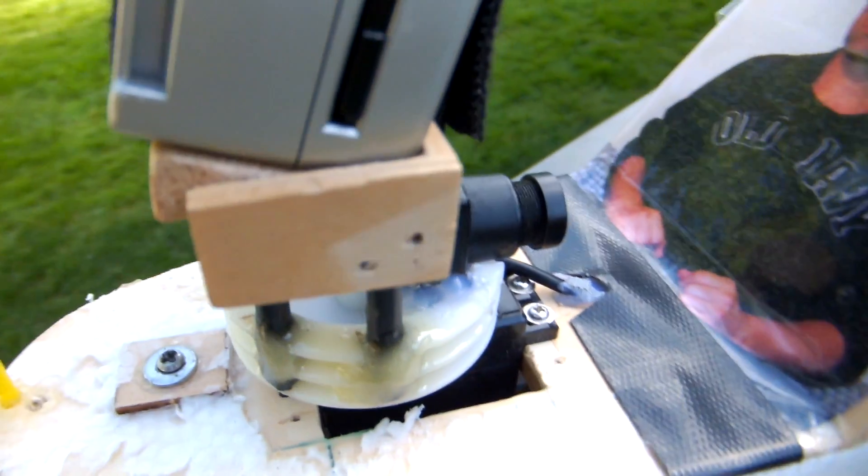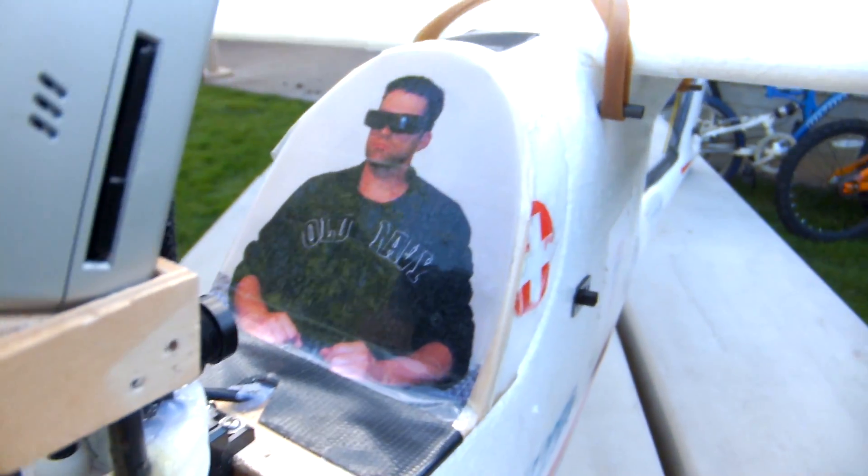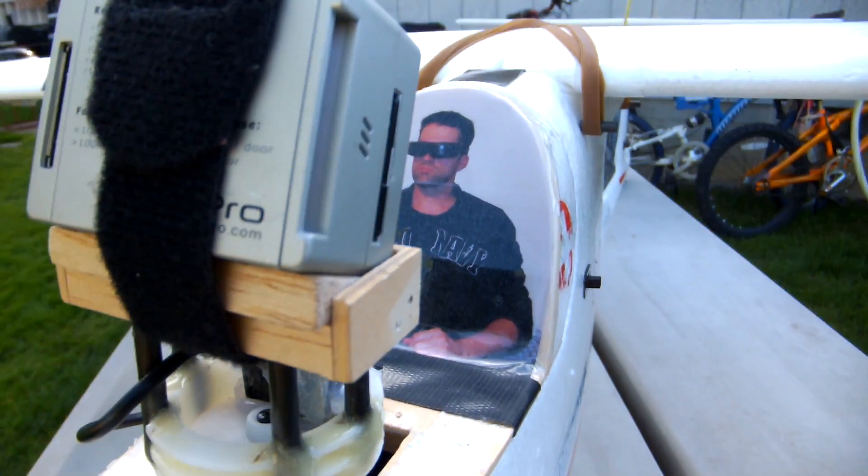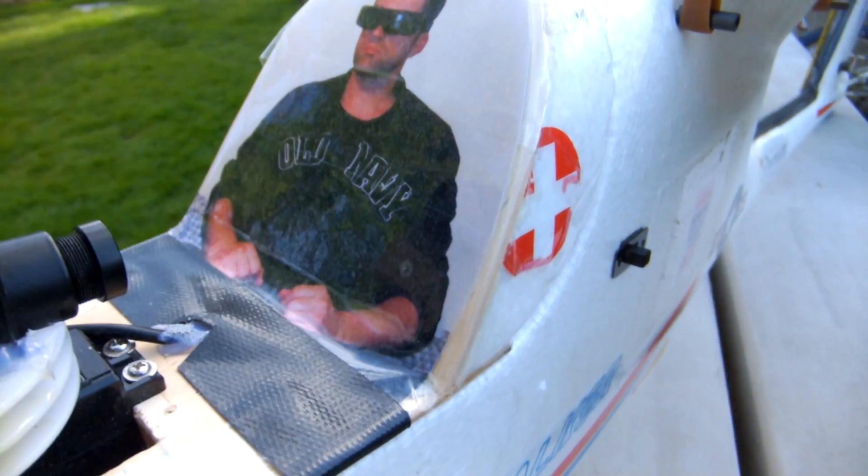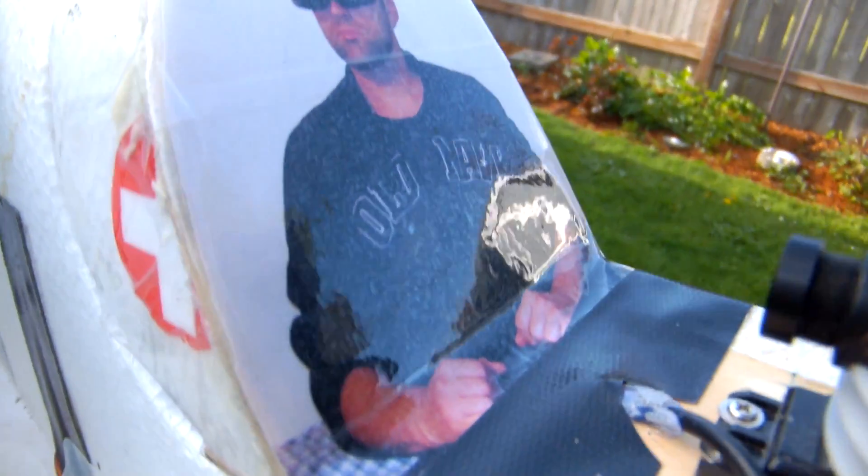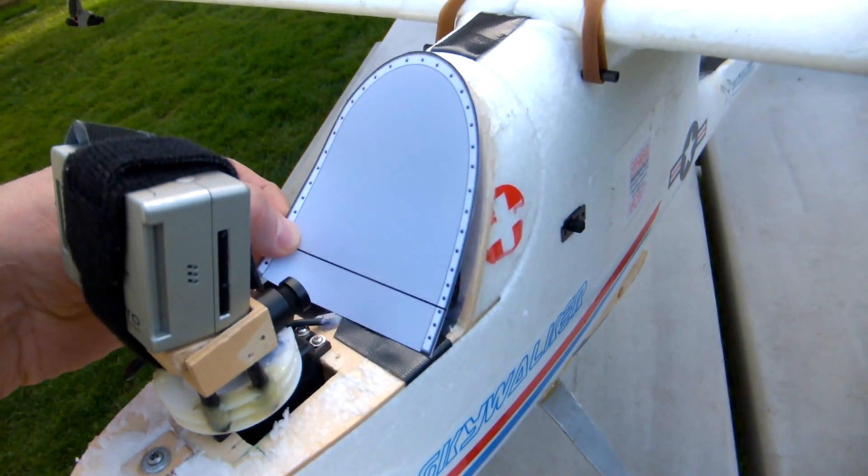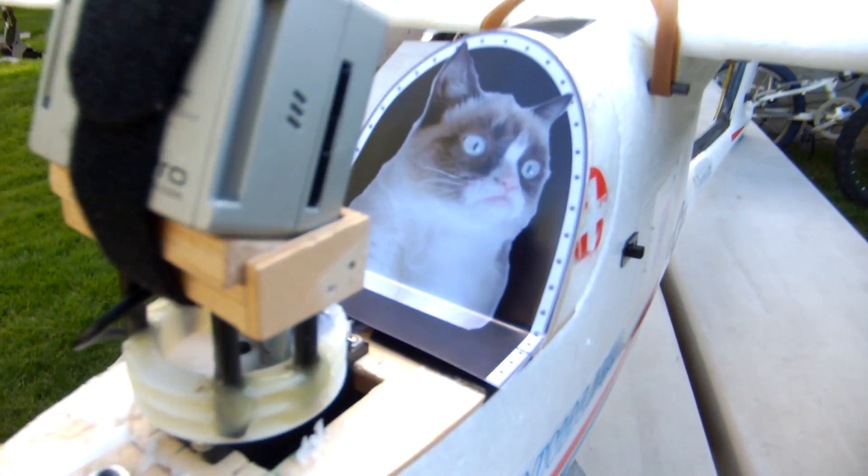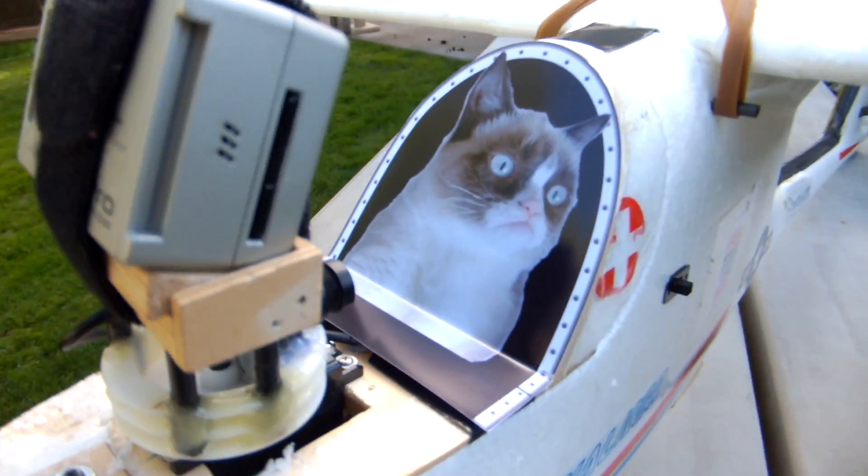So, I took a picture of myself wearing FPV goggles, printed it out on my computer, trimmed it to size, and then taped it on my canopy with packing tape to make it water-resistant. The neat thing about it is I can change the picture anytime I want, add a new pilot anytime I want. You can also use this space to advertise your own website or your own product, or you can put a photo of your pet in the cockpit, whatever you want to do.